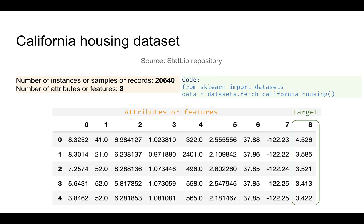Finally, the California Housing dataset is comparatively smaller but still substantial, with around 20,000 records and 8 features. The target is a float value, so this is a regression-type dataset. You can train regression models on it, and it is loaded using `fetch_california_housing`.